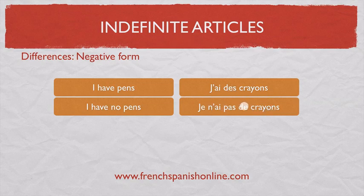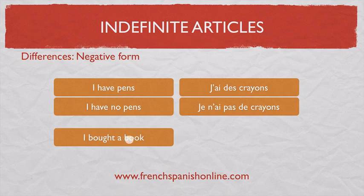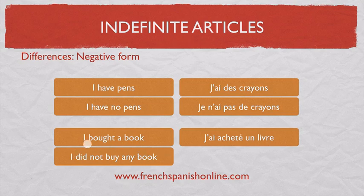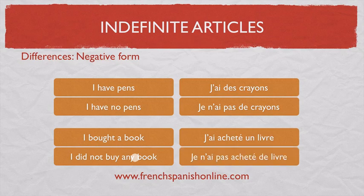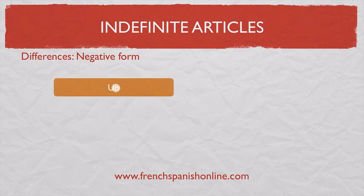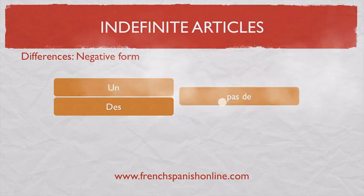It's very important to be careful about this — there are many errors on the internet and in books on this point. It works for plural but also for singular: 'I bought a book' — 'J'ai acheté un livre.' If you want to say 'I did not buy any book', in French the negative form is 'pas de': 'Je n'ai pas acheté de livre.' So the negative form of 'un', 'une', and 'des' is 'pas de'.